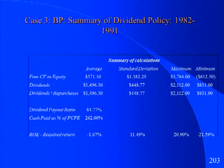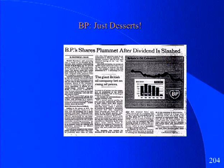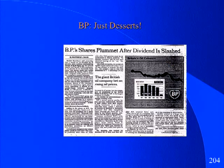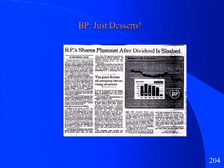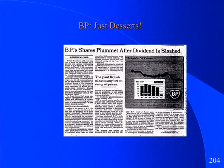Everybody agreed this was unsustainable, and the right corporate finance thing to do was to cut dividends. To show you there's no justice in the world, this is what the news story was the day after the dividend was cut: 'BP shares plummet after dividend is slashed.' They did the right thing. But why did they finally do it? Where did they get the billion dollars every year? They borrowed the money. In 1992, when they went to borrow, the banks finally said no: 'You're already the most levered oil company in the world.' So they were forced to cut dividends — and the markets still didn't like it.